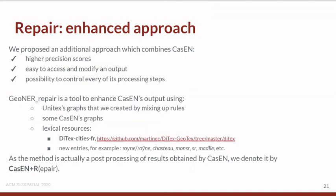Choosing Kazen to enhance our approach was not a random choice: it gets higher precision scores, is easy to access and modify, and lets us control the processing steps. Using Kazen, we enhance Kazen's output by mixing in new graphs, using Kazen's already-existing graphs, adding lexical resources like dictionaries of cities for France, adding new entries inside graphs, and working on post-processing results obtained by Kazen. We denote this enhanced step as Kazen+R, where R stands for repair.